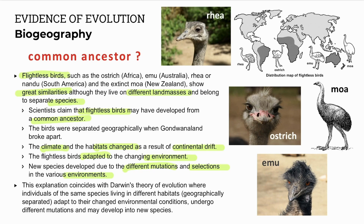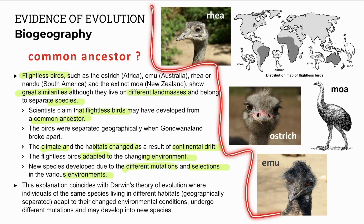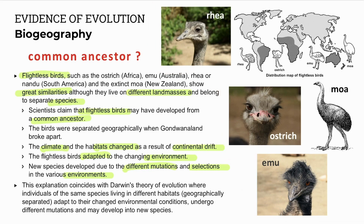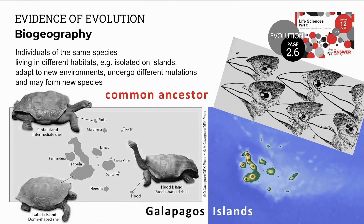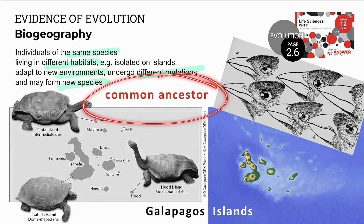However, more recent genetic studies show that these flightless birds evolved from different ancestors on different continents. Islands show unique species as they are geographically isolated. For example, Darwin's finches and the tortoises of the Galapagos Islands. Islands show individuals of the same species in different habitats adapting to different environments, undergoing different mutations, and may eventually form new species — that is, they descend from a common ancestor.